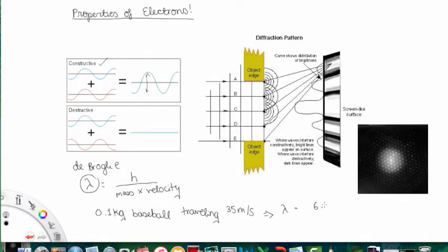Planck's constant is the number we've been using, 6.626 times 10 to the power of negative 34 joule second, divided by the mass which is 0.1 kilograms, and the velocity which is 35 meters per second. We end up with a value of 1.9 times 10 to the power of negative 34 meters.